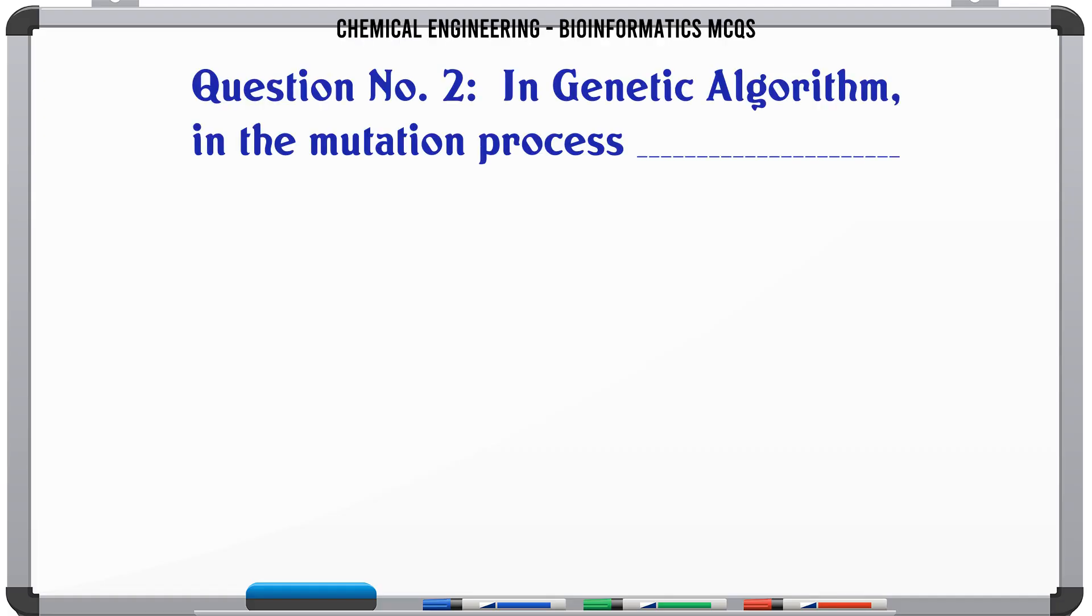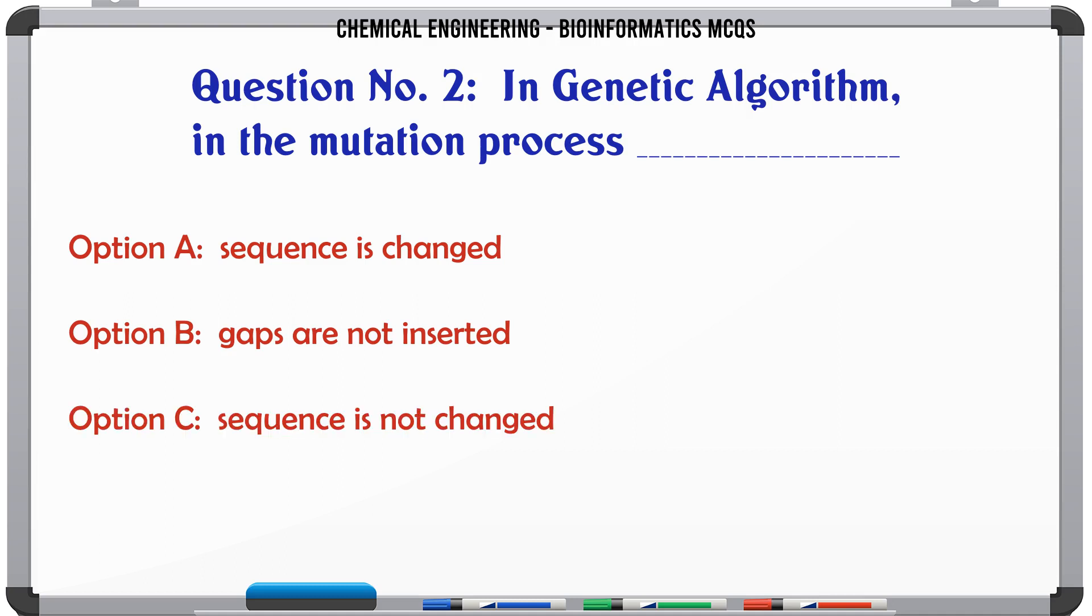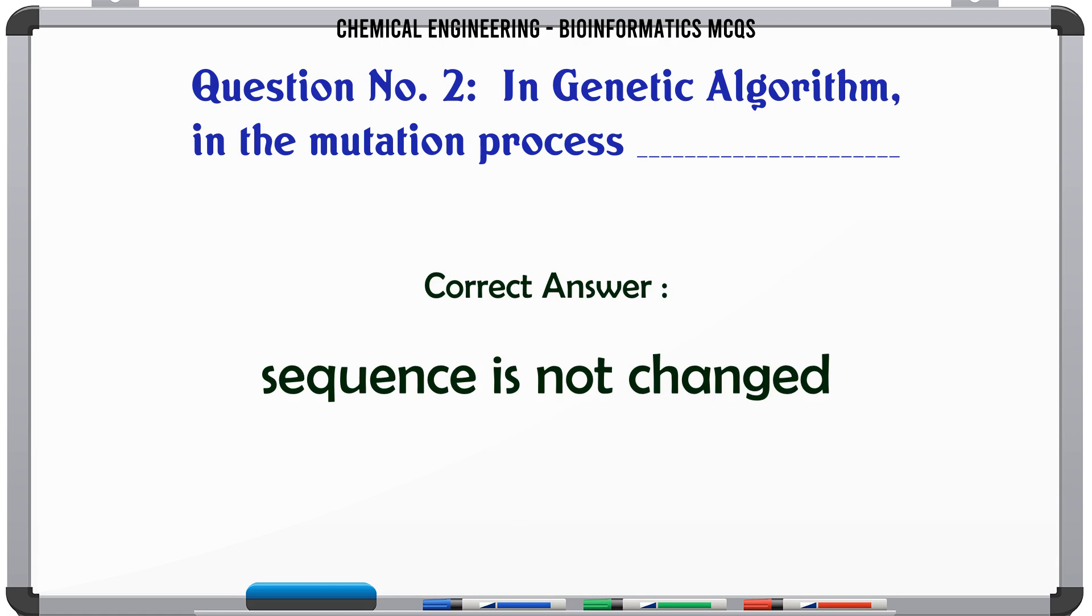In genetic algorithm, in the mutation process: A. Sequence is changed. B. Gaps are not inserted. C. Sequence is not changed. D. Gaps are not rearranged. The correct answer is: Sequence is not changed.